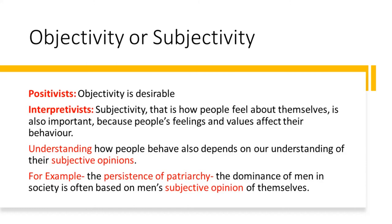Understanding how people behave also depends on understanding their subjective opinion. For example, the persistence of patriarchy — that is, the dominance of men in society — is often based on men's subjective opinion of themselves. It is not true that they are superior, but they feel like that. So therefore, if we want to understand why people behave in certain ways, we should also understand their subjective opinions about themselves. That's why subjectivity is also something necessary and important to understand.